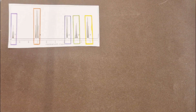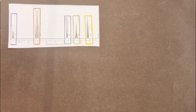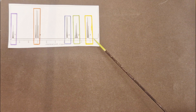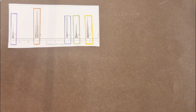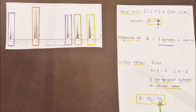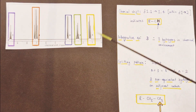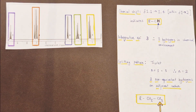Let's tackle this spectrum one data set at a time, starting with the triplet peak found around the 1.1 parts per million region. Here is a summary of all the information we can gather about this first triplet peak.